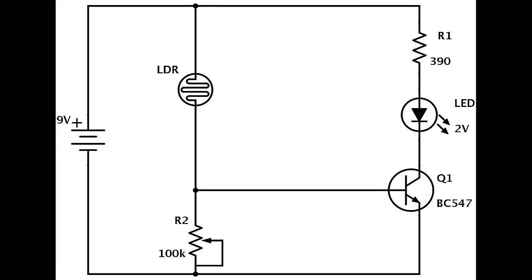Each electronic component has a symbol. Here is a resistor, and here you can see a transistor. After seeing a few circuit diagrams, you'll quickly learn how to distinguish the different symbols.